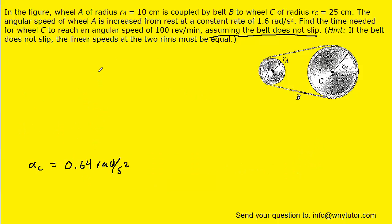Now the question notes that wheel A begins from rest and that would mean that wheel C also begins from rest. So we know that the initial angular velocity for wheel C is going to be 0 radians per second.